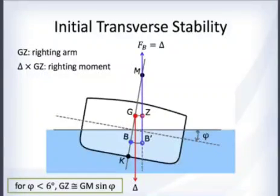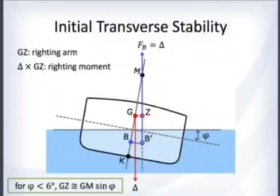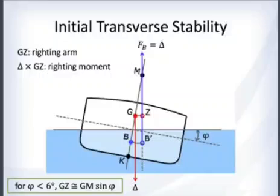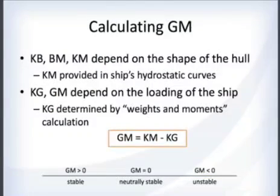If you know GM, you can calculate GZ for small angles, which gives you the righting arm. GM is your measure of initial transverse stability.